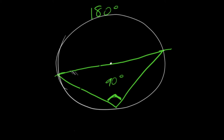So anytime you see an inscribed angle where the endpoints connect through the center of the circle, you'll know that the inscribed angle is always going to be 90 degrees.